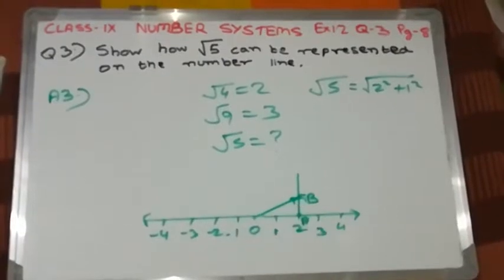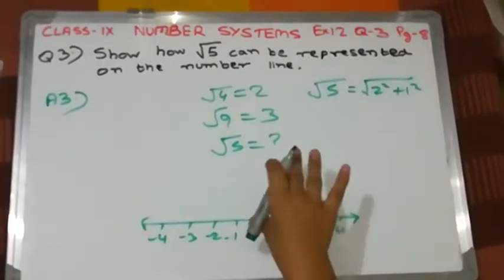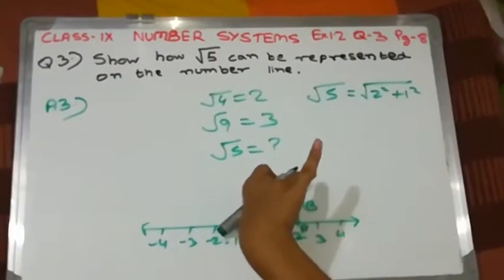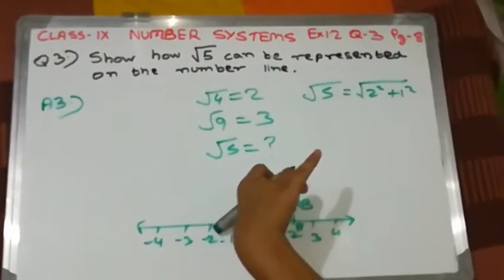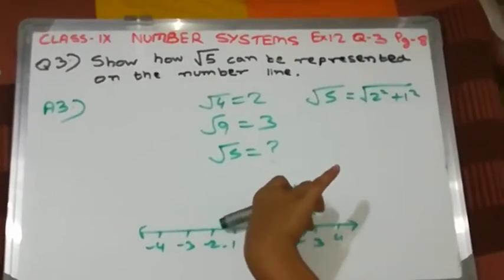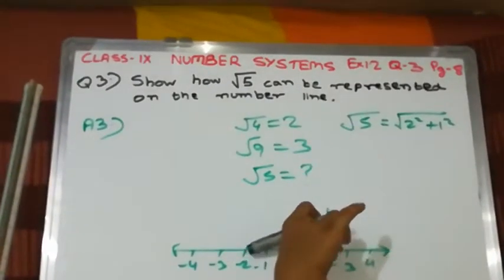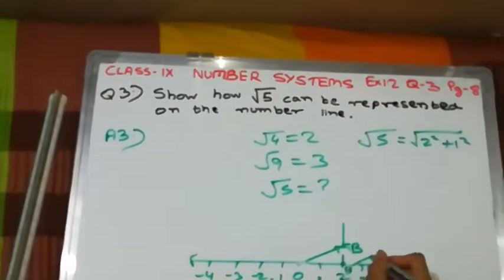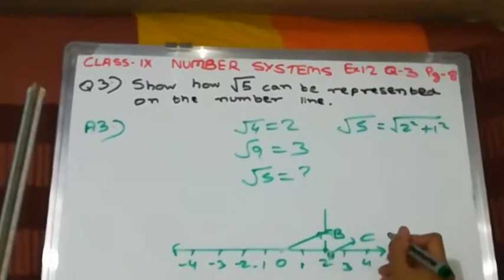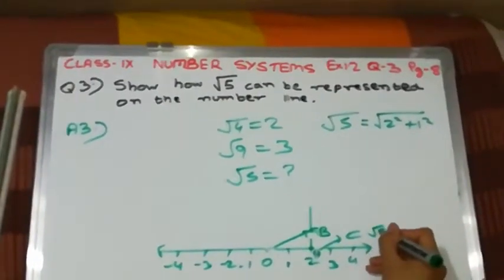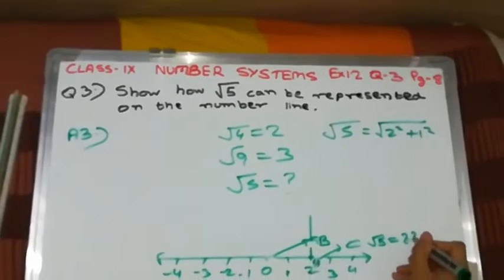Taking this length, we will cut an arc down here. This point will be C, and this is the value of √5, approximately 2.2, because this is √5.